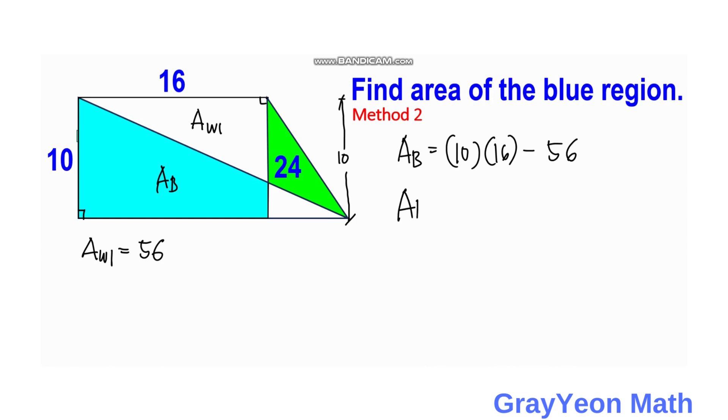And that would be area of the blue is equal to 160 minus 56, and area of the blue region is equal to 104 square units.